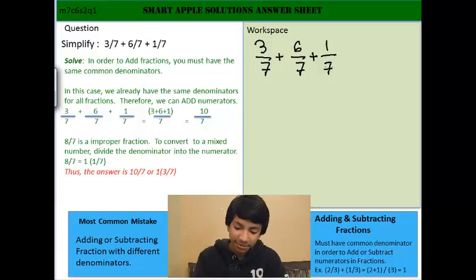Now, as you may notice, all of these fractions have the same common denominator, which is 7. Now, when you have the same common denominator, you can add all of the numerators up.